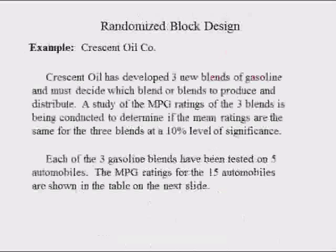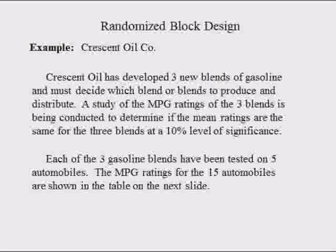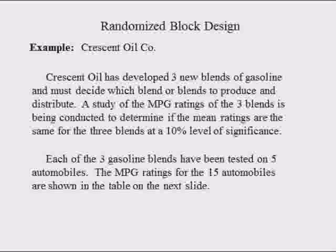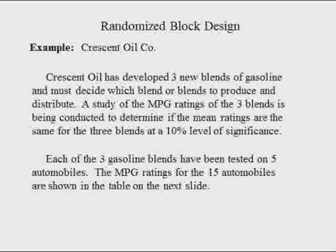In the previous ANOVA test, experimental units were homogeneous. However, since differences may exist between experimental units, randomized block design is used to account for these differences. For example, Hispanic women tend to be more traditional because they are Catholic, and hence are more likely to be married and stay-at-home moms.